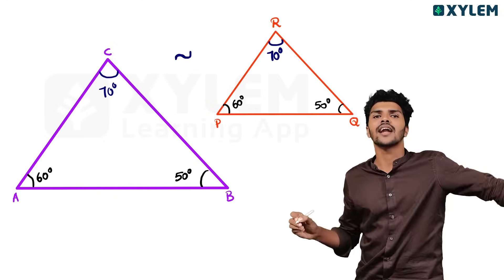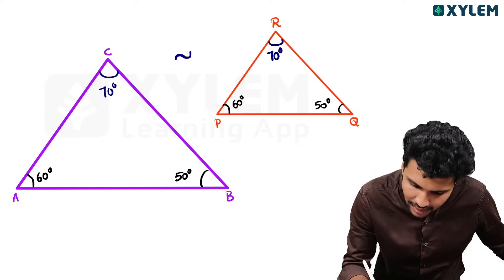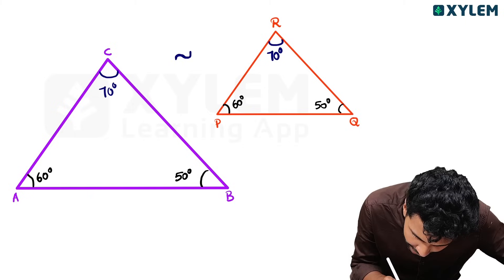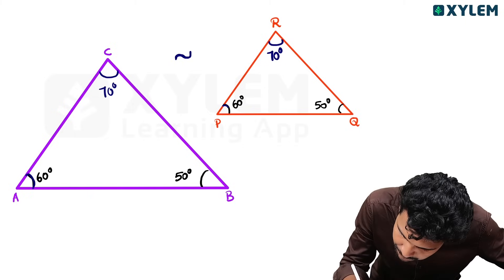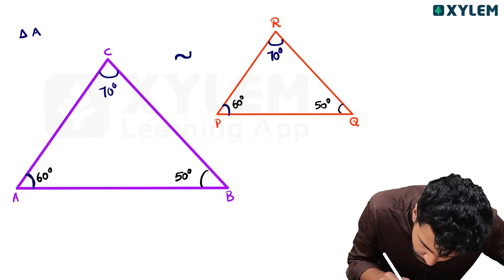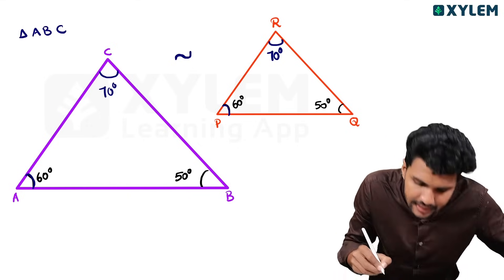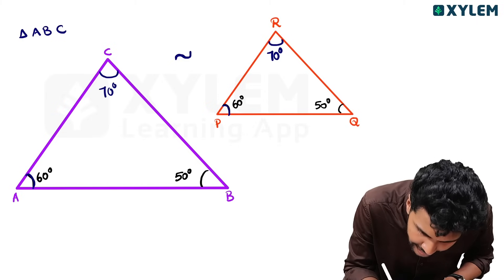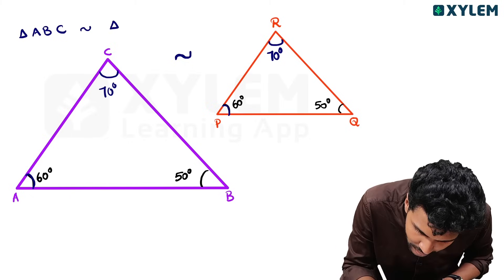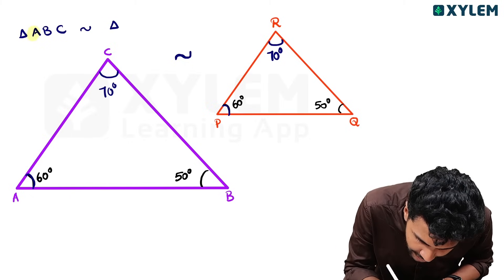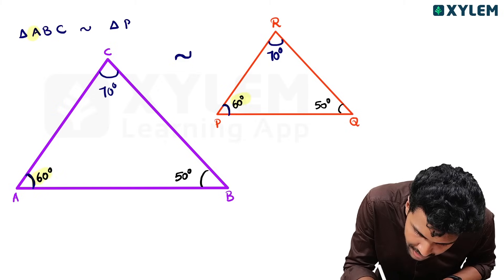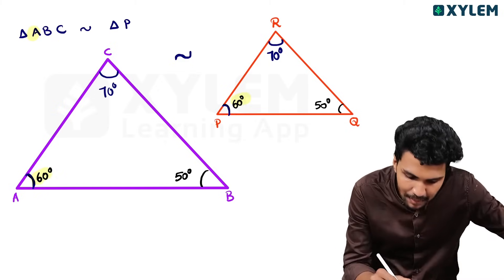It's similar. Now, angle A is 60 degrees and angle P is 60 degrees. Triangle ABC is similar to triangle PQR.